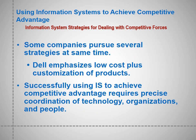Some companies pursue several strategies at the same time. For example, Dell emphasizes both low cost and customization of products. To successfully use IS to achieve competitive advantage requires precise coordination of technology, organization, and people. Your IS would not be effective if there is no precise coordination of those three elements. Today, information management is reliant on different information systems.